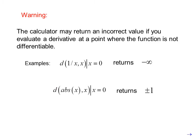The derivative of |x| with respect to x at x = 0 returns ±1. In actuality, in neither of these cases is the derivative defined.